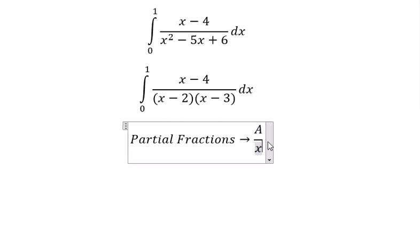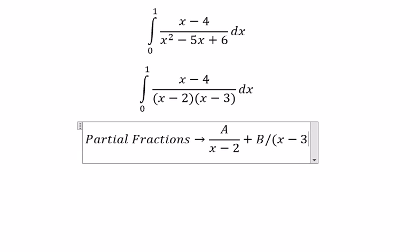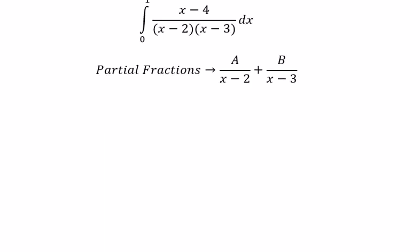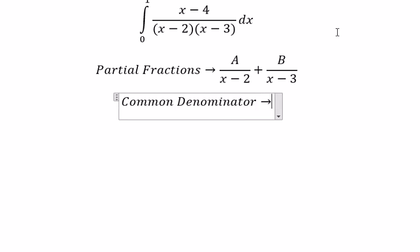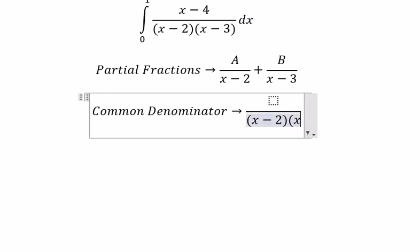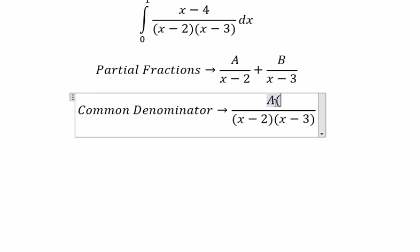We have capital A over x-2 plus capital B over x-3. Next we do common denominator, so we have (x-2) multiply with (x-3), and we have A multiply with x-3 and B multiply with x-2.